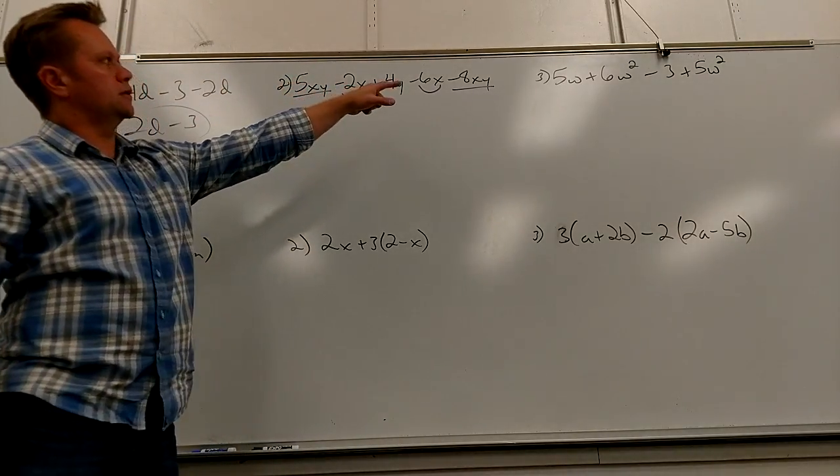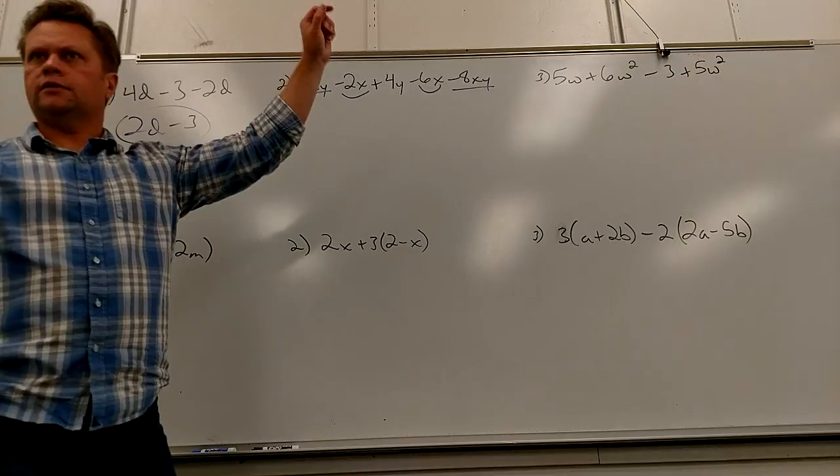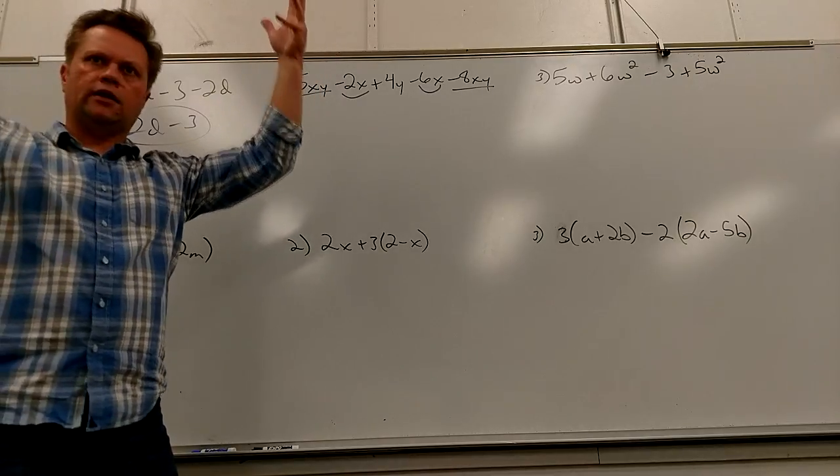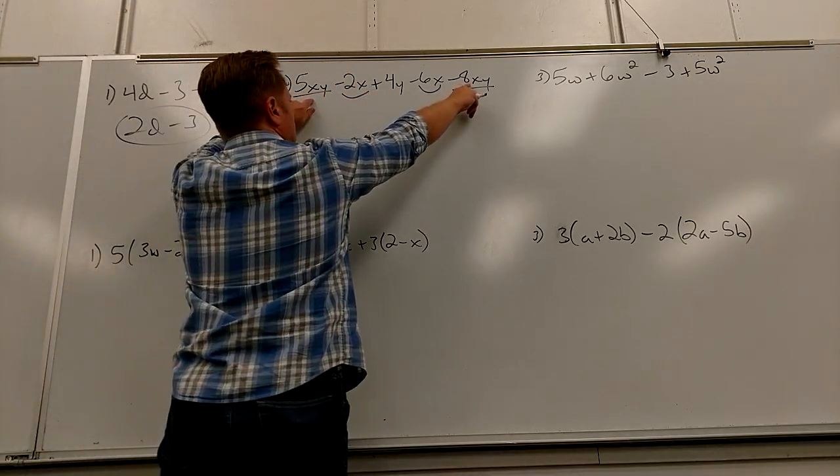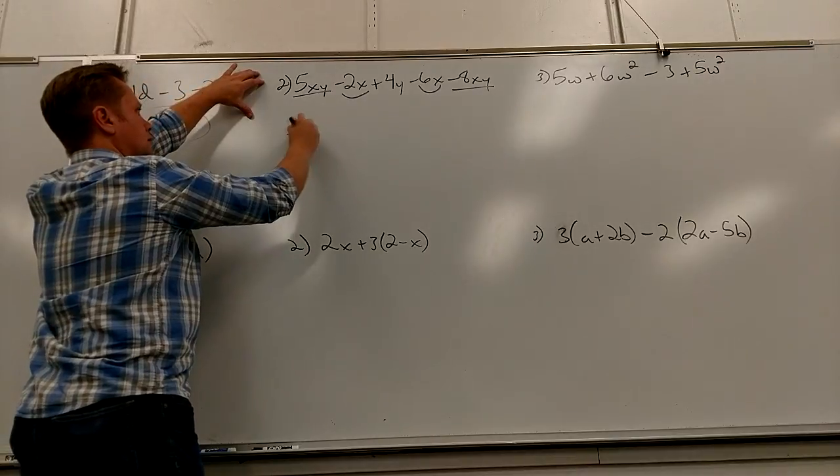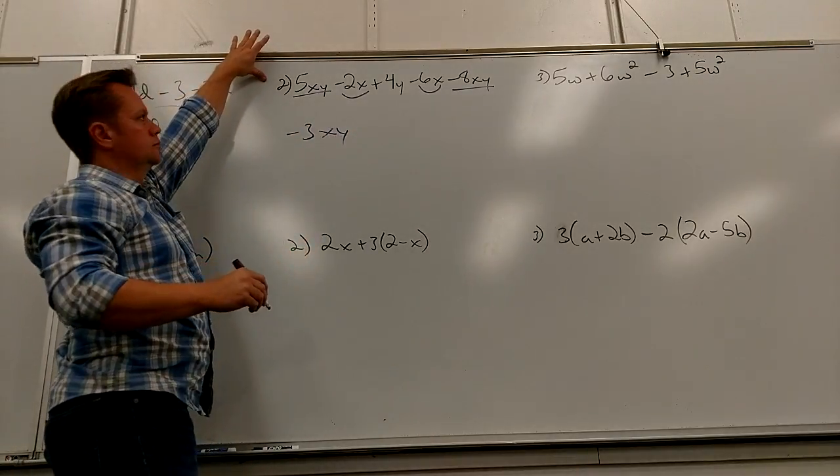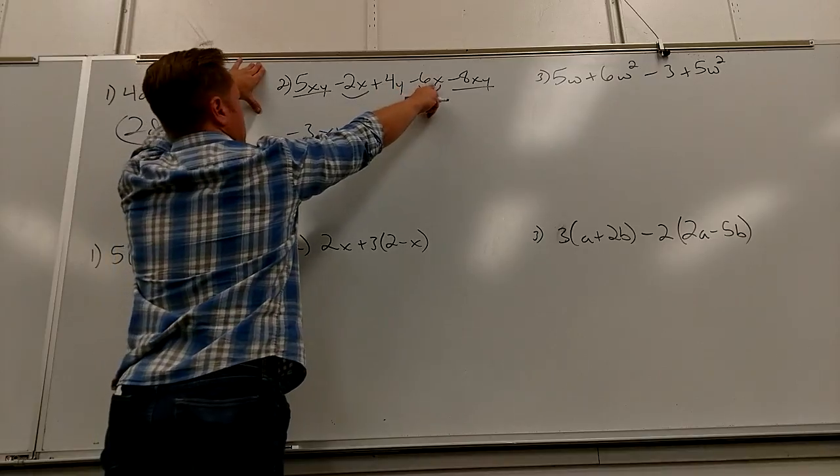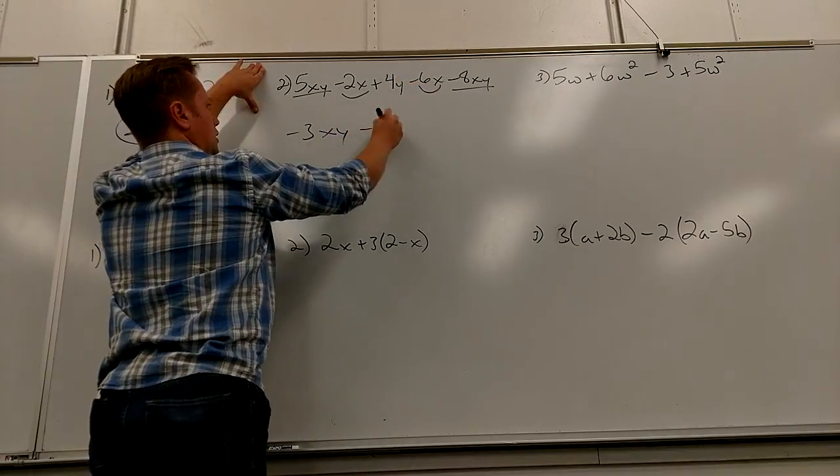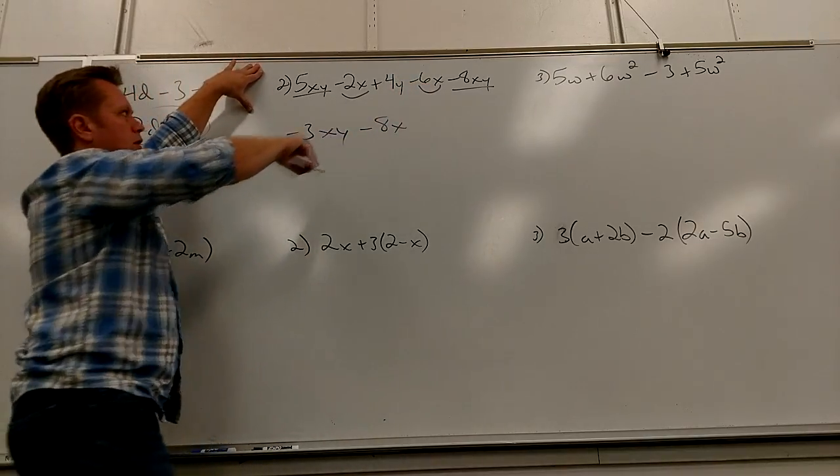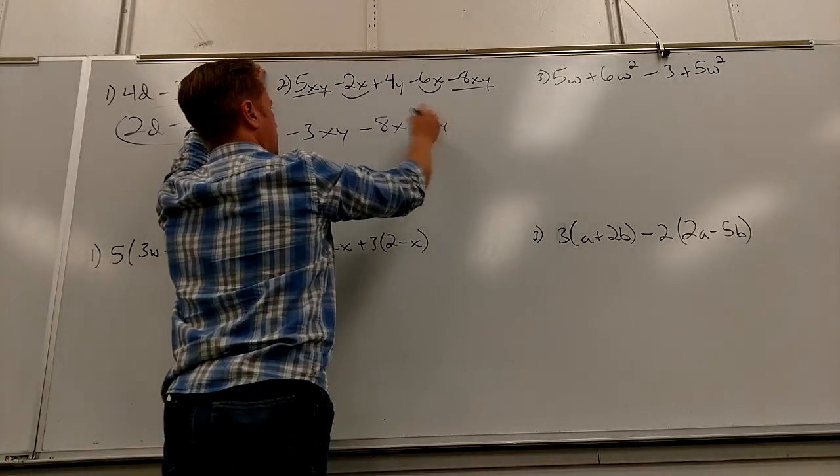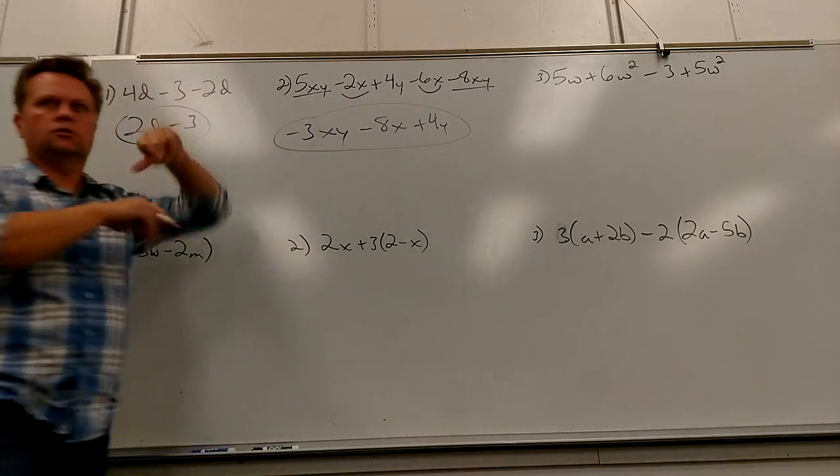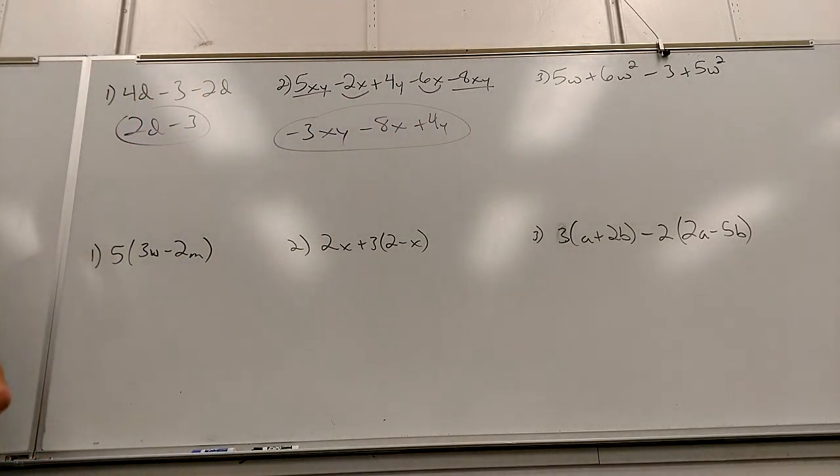So see what I'm doing there? I mean, the little thing I do is I underline them in different shaped underlines. So I don't have to move anything around. So five of these minus eight of them is negative three of them. And then negative two and minus six. Negative eight of them. And then the plus 4Y is all by himself.